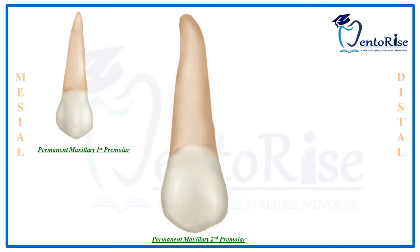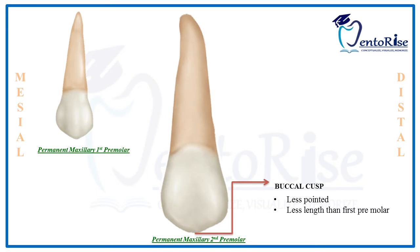The dental anatomy of permanent maxillary second premolar is very much similar to the anatomy of permanent maxillary first premolar except for a few differences. Therefore, it is always the best approach to study this tooth by differentiating it from the first premolar. The buccal cusp in a permanent maxillary second premolar is less pointed than that of the buccal cusp of permanent maxillary first premolar.